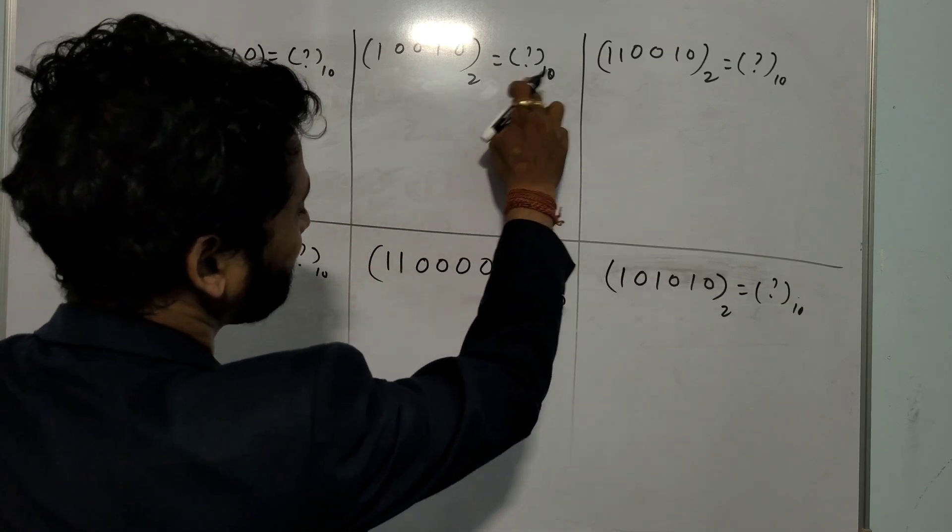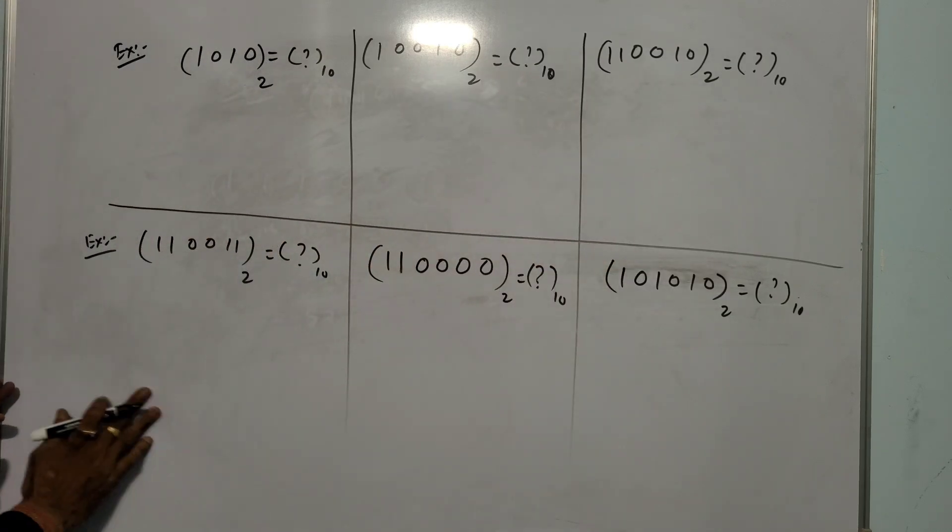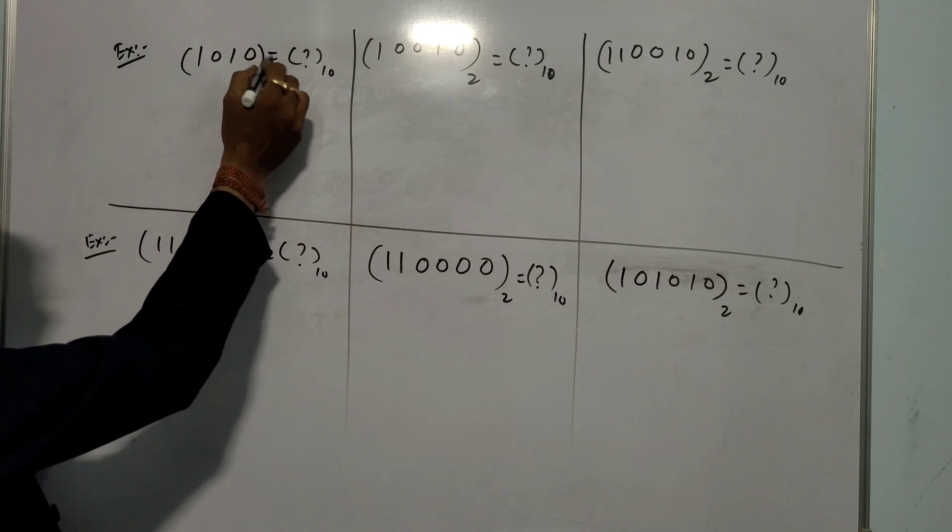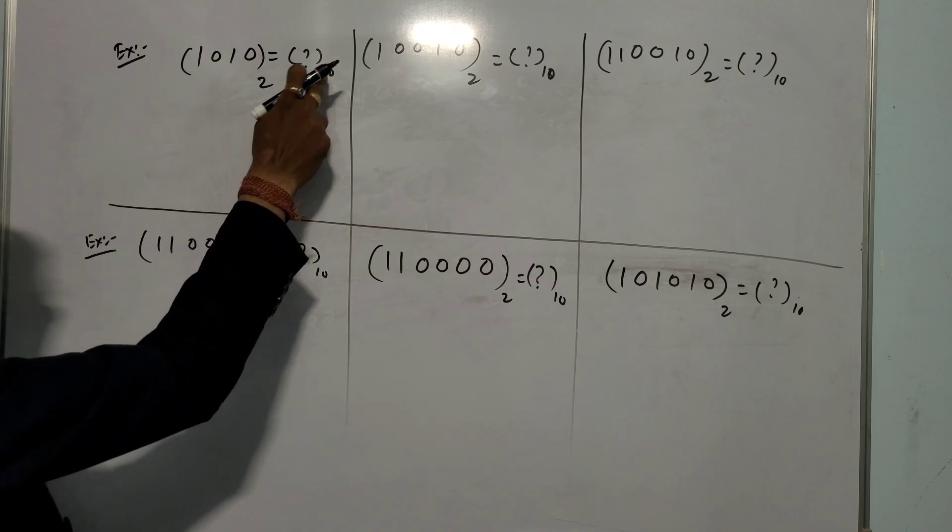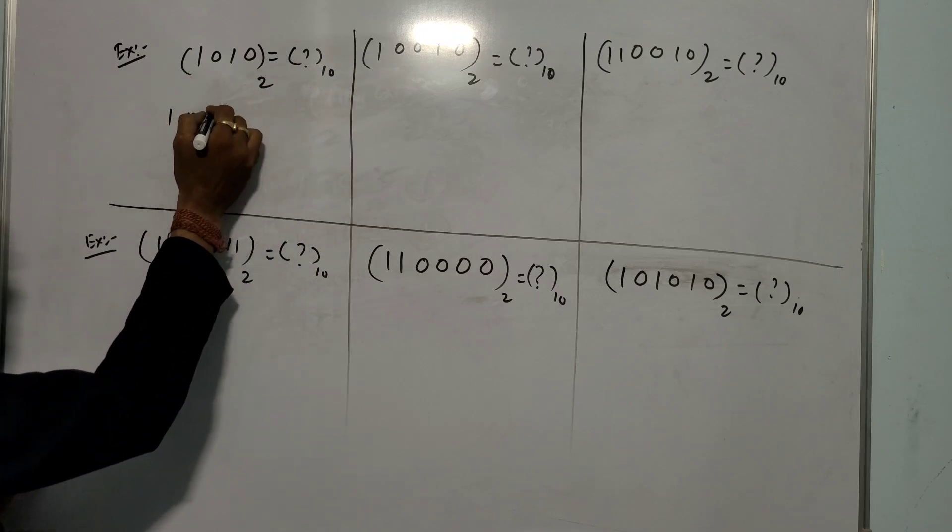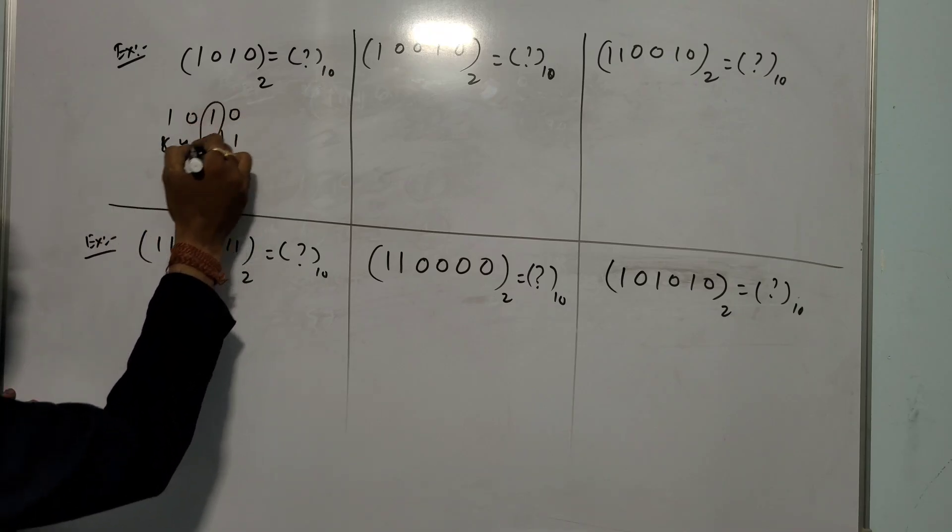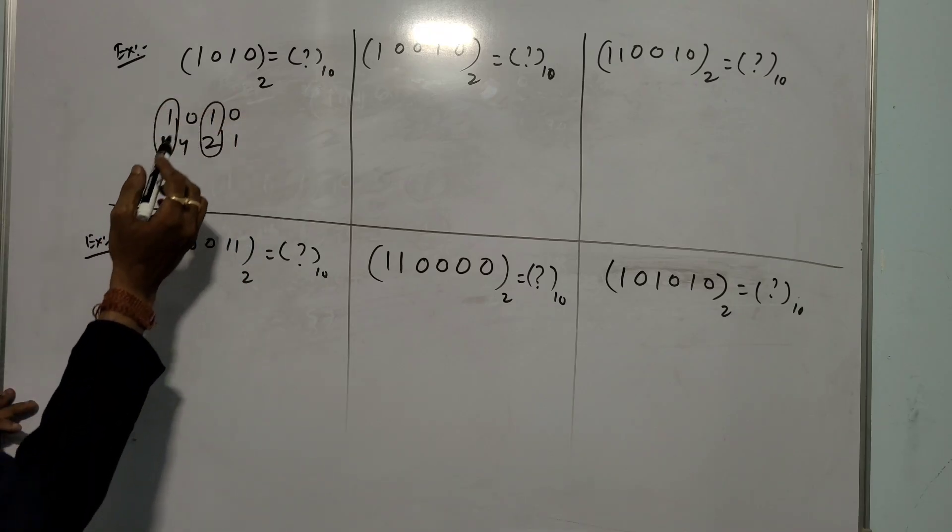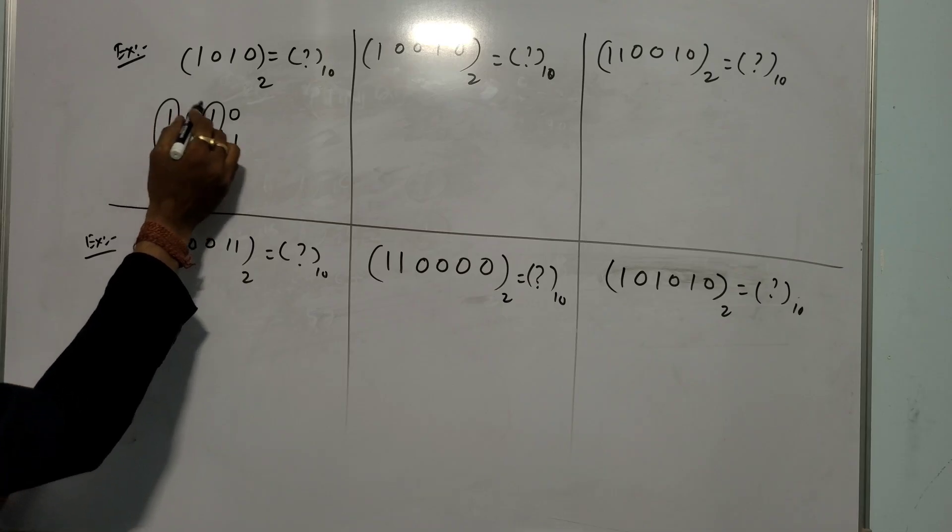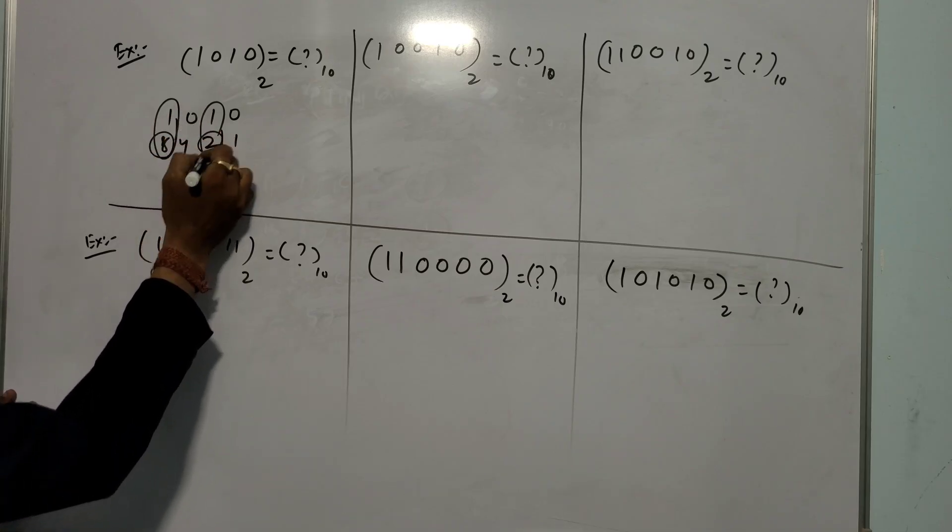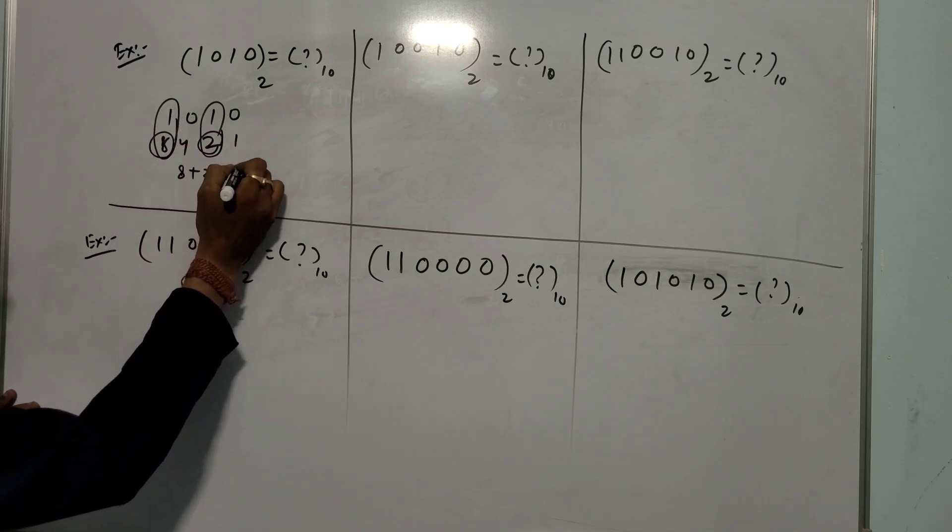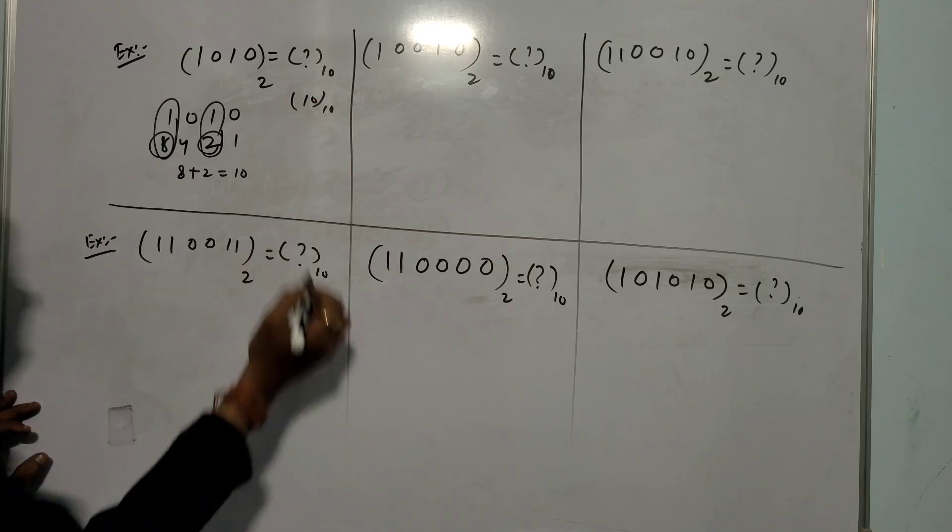I will write a few examples. Let's solve. 1010, what is the corresponding decimal value? Tell me 1010. I will write 1, 2, 4, 8. You take this one only. What is the answer? Value is 8. 8 plus 2 is 10. So answer is 10.